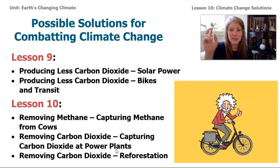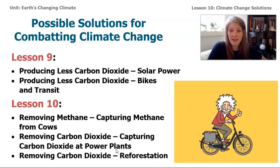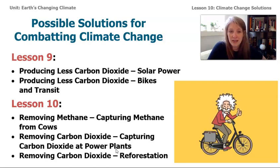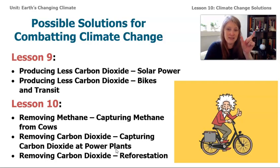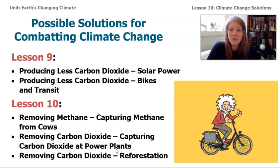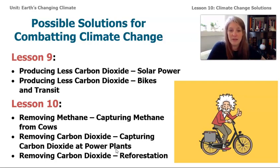During lesson 9, we looked at two solutions — both about making less carbon dioxide, either using solar power or bicycles and transit to get around. In lesson 10, we'll look at three new ideas: capturing methane from cows, capturing carbon dioxide at power plants, and reforestation. You can see the word 'forest' in the middle of that big word — reforestation talks about planting trees and having new forests grow where they've been cut down in the past.